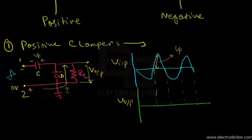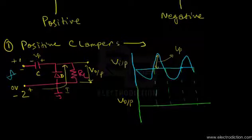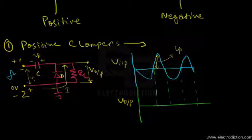Now in the second half cycle, the polarity across terminals 1 and 2 changes — terminal 1 is now comparatively positive with respect to terminal 2, which is comparatively negative. The anode of the diode gets a comparatively negative voltage compared to that at terminal 1, so the diode starts behaving as an open circuit element since it gets reverse biased. No current through the diode flows. The input voltage available at terminals 1 and 2 appears across the load resistance, along with the peak voltage that the capacitor charged to in the previous half cycle.